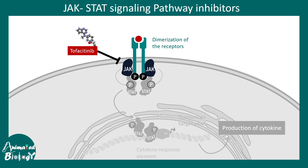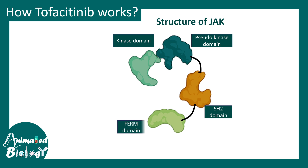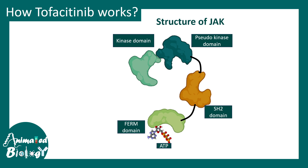The JAK molecule has a kinase domain, pseudokinase domain, SH2 domain, and FERM domain. ATP must bind to the kinase domain for JAK to phosphorylate its targets. Tofacitinib competitively inhibits ATP binding — it occupies the ATP-binding site instead, thereby inactivating JAK activity. This is why it represents such an important therapeutic target.